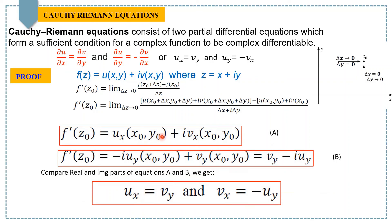After comparing the real and imaginary parts, you can see the first one uₓ = vᵧ and the second is vₓ = -uᵧ. If both equations are true for any given function, then the complex derivative of that given function will exist.